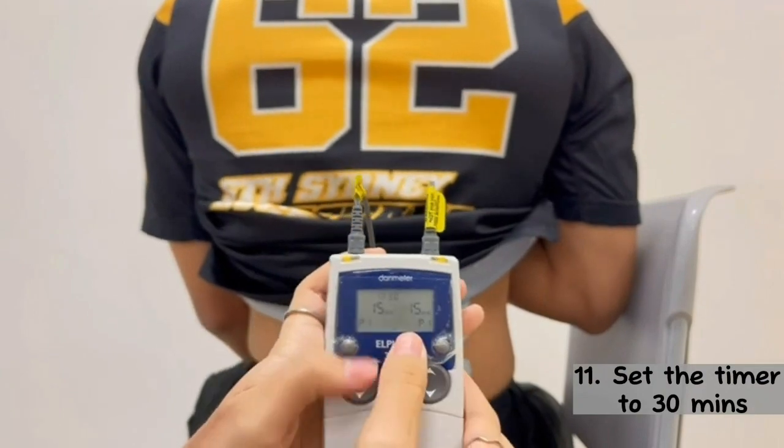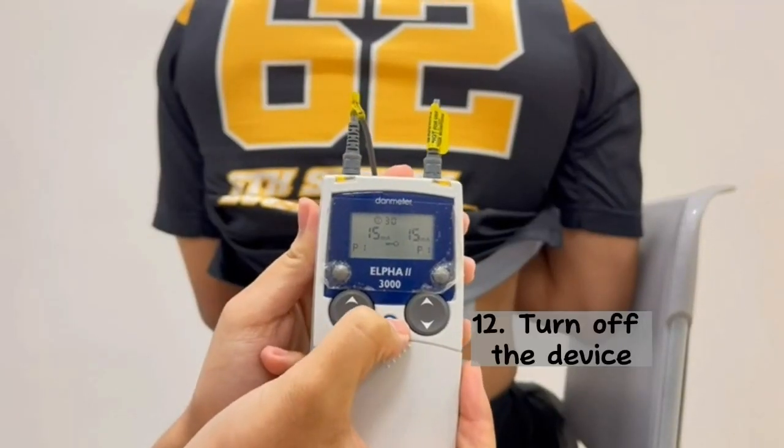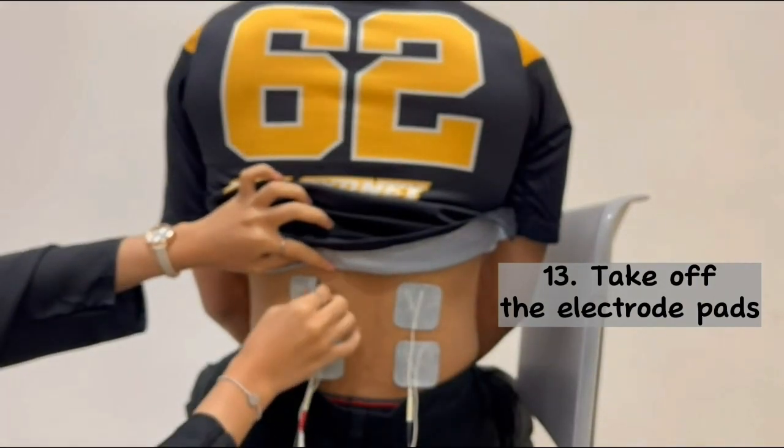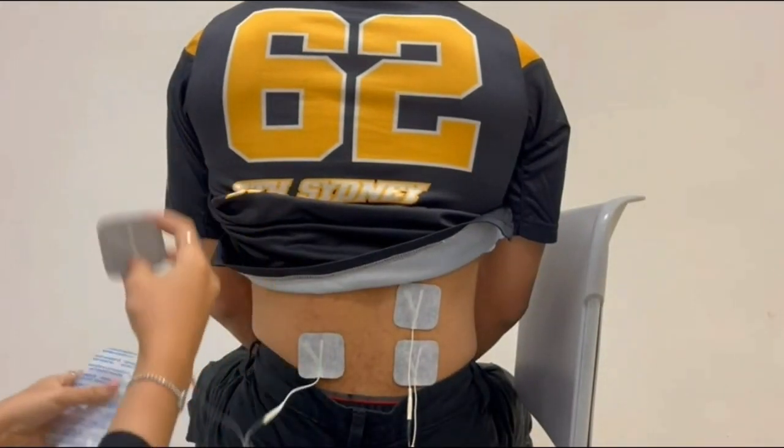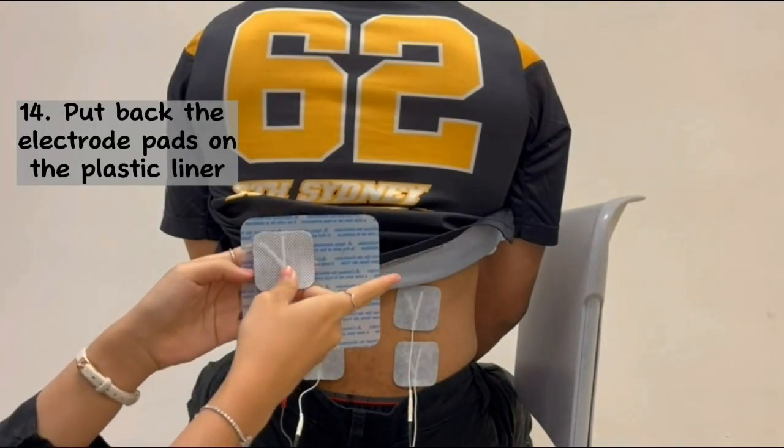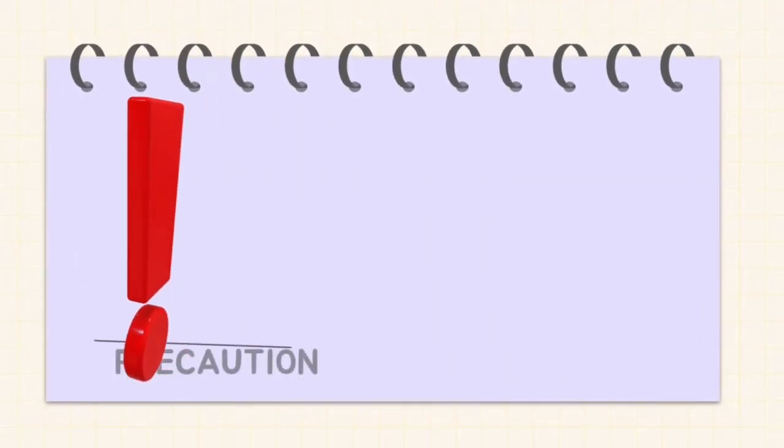Make sure to set the timer to 30 minutes. 30 minutes later, turn off the device. Then, remove all the electrode pads and put back the electrode pads on the plastic liner.